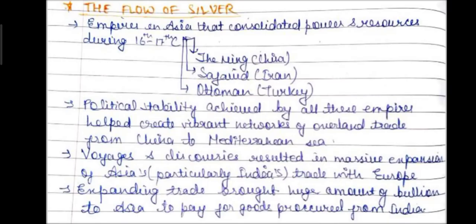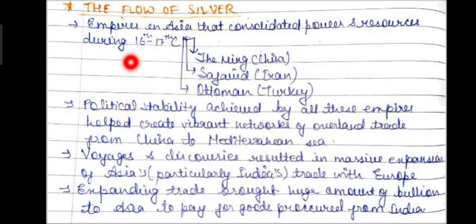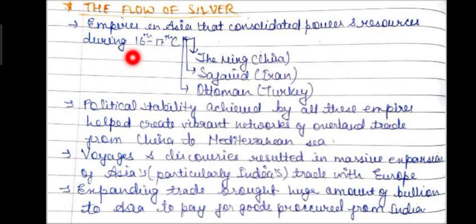Now we look at the flow of silver. Empires in Asia that consolidated power and resources during the 16th and 17th centuries included the Ming dynasty of China, the Safavid Empire of Iran, and the Ottoman Empire of Turkey.